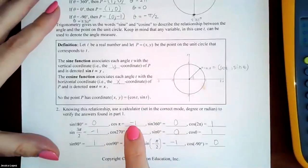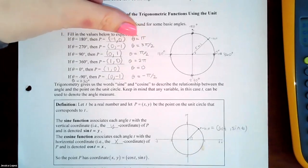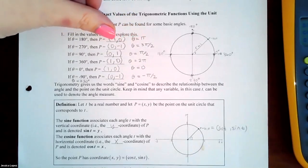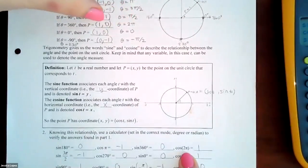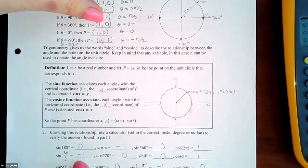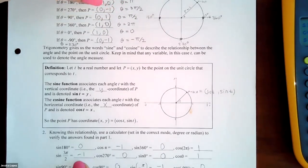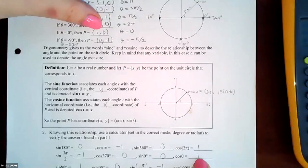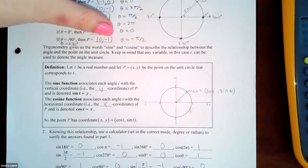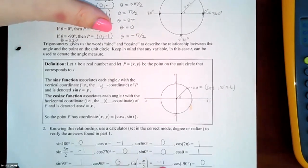Let's verify. Cosine of π was −1 — looking where the angle is π, cosine means verifying the x-coordinate, which was −1. Verified. Cosine of 2π: the x-value is 1, and the calculator gave 1. Sine of 3π/2: sine means the y-value, which was −1, and the calculator gave −1. Cosine of 0 radians: x-coordinate is 1, calculator gave 1. Sine of −π/2: y-coordinate is −1, calculator gave −1. All verified.